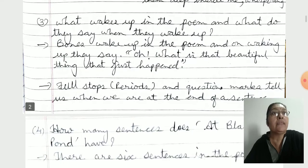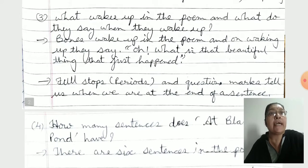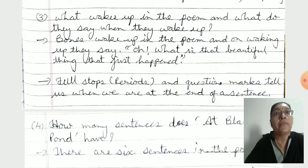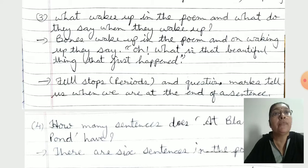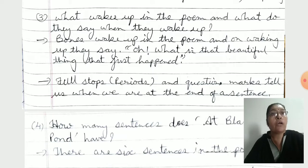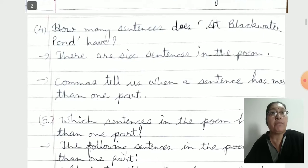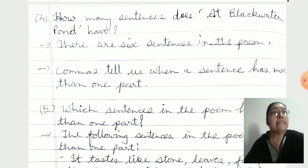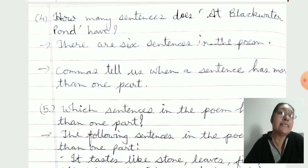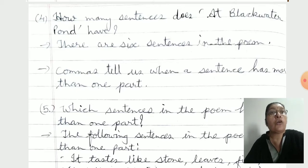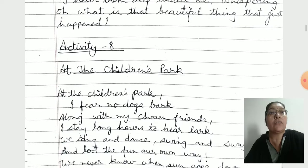What wakes up in the poem and what do they say when they wake up? Bones wake up in the poem and on waking up they say, 'Oh, what is that beautiful thing that just happened?' You have to mention this punctuation as per the poem. How many sentences does 'At Blackwater Pond' have? There are 6 sentences in the poem. As per this poem, question answers you have to learn.